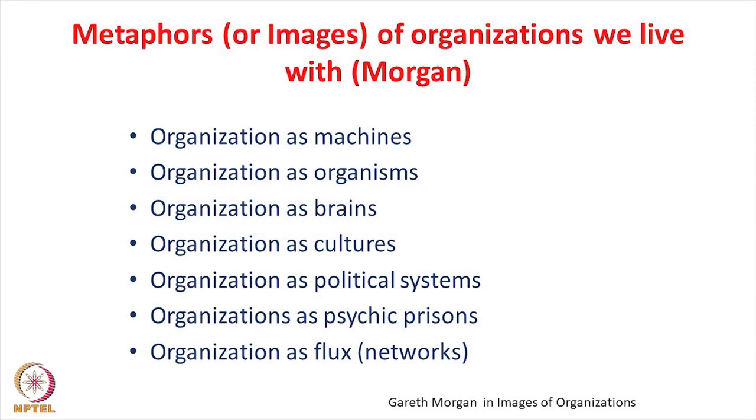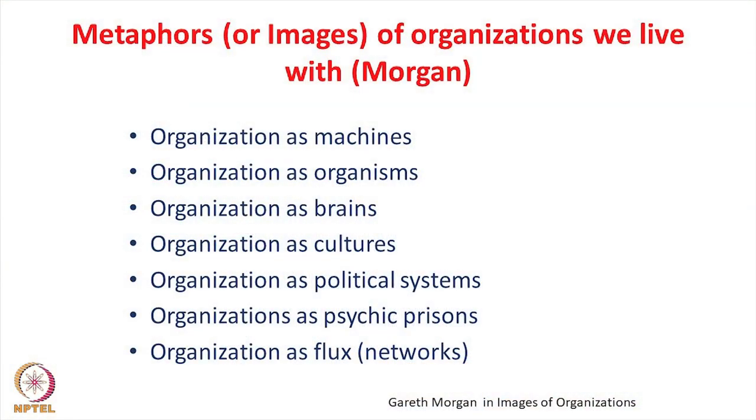Organization can also be understood as a political system. Like any human system, organizations can have a powerful group and a less powerful group. How they are influencing each other, what are their struggles, and what is the nature of their interaction — all that can be understood much better if we look at organization as a political system. We can also look at organization as a psychic prison. People adopt certain roles and start living those roles in the organization, which is reflected in their behavior and the quality of interaction. Those roles start defining their nature of interaction.